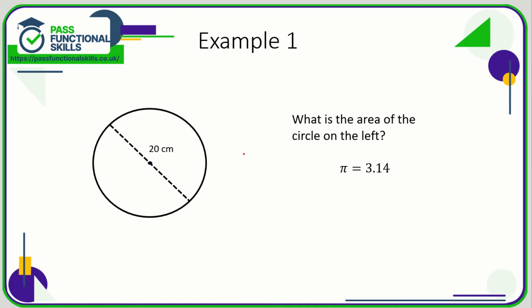Let's take a look at a couple of examples. What is the area of the circle on the left? The formula for area is πr², which means π times the radius times the radius.